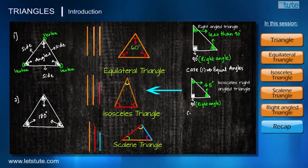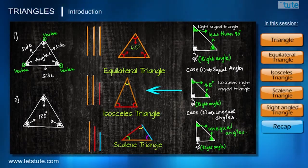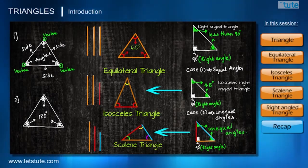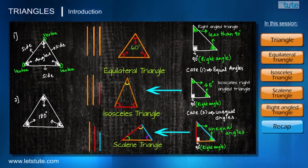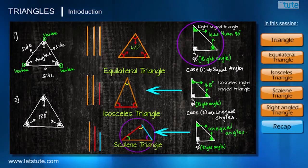Now for case two: when the two remaining angles other than the right angle are not equal to each other, all three angles are different. That means all three sides have different lengths, following the property of a scalene triangle where all three sides and angles are of different measures. Such triangles are both scalene and right-angled, and they are called scalene right-angled triangles.